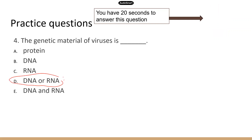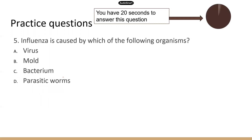For all other living organisms — from bacteria to fungi, to protozoans, to plants, to animals, to humans — we all have DNA. But viruses are a little bit special; they could have RNA as their genetic material.